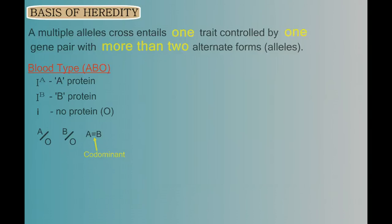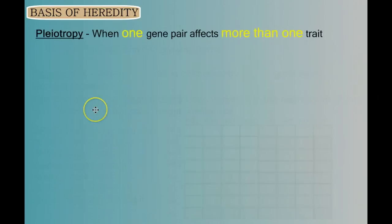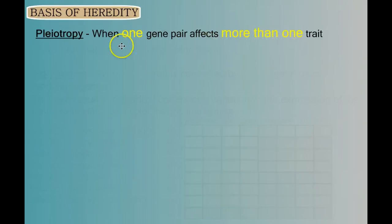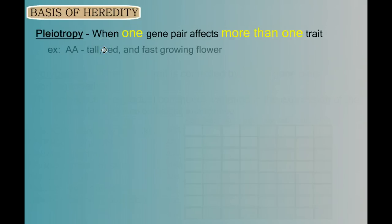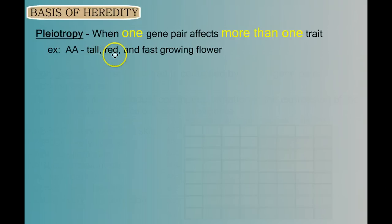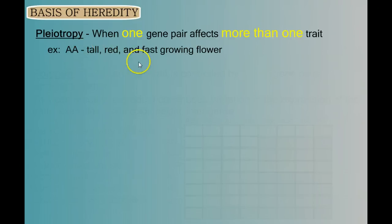Let's move on. Our next variation on Mendel's theme is pleiotropy, where one gene pair affects more than one trait. Imagine that one gene pair — two big A's — made you a tall, red, fast-growing flower. So this one pair of genes is affecting more than one aspect of the phenotype.